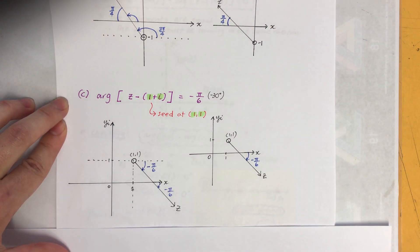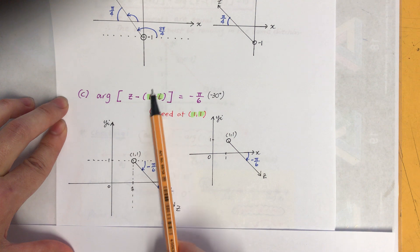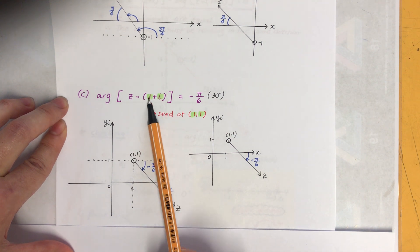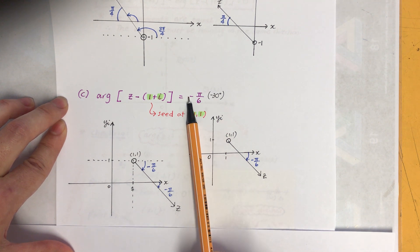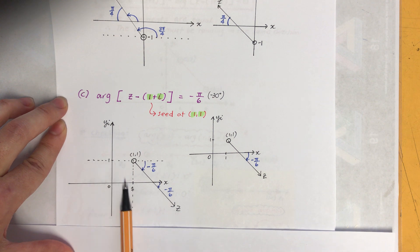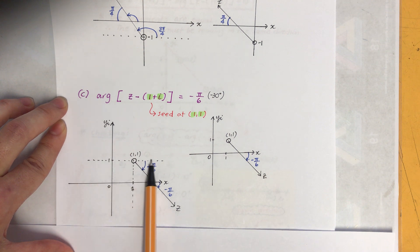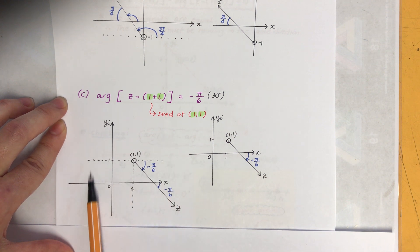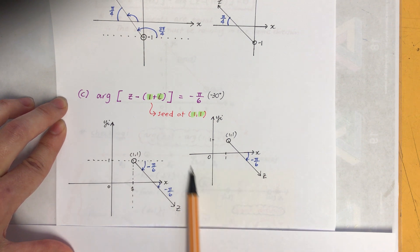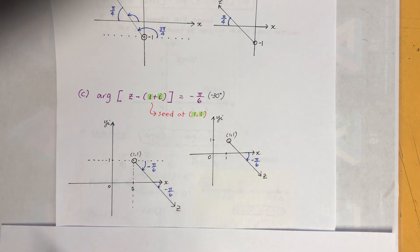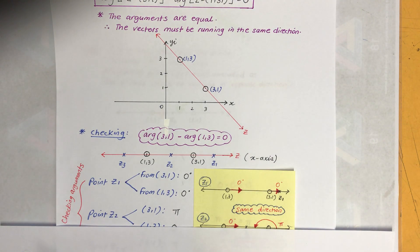Part c: the seed starting point is (1, 1). It's a clockwise direction because it's going to minus π/6, which is negative 30 degrees. Start at (1, 1), sketch the parallel line to the x-axis, then go down by minus π/6.